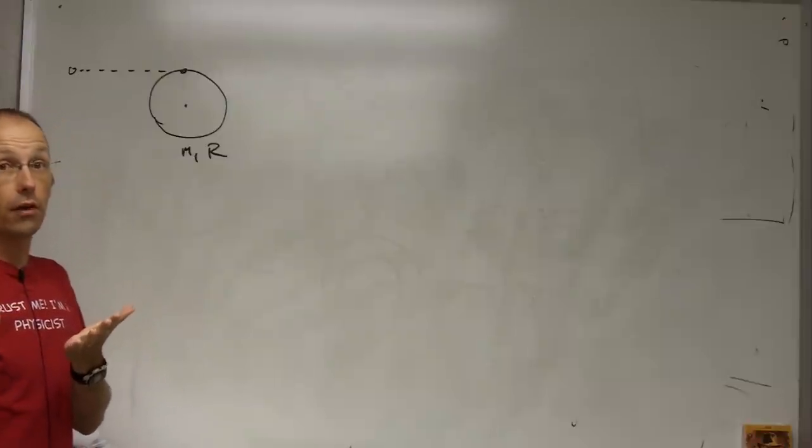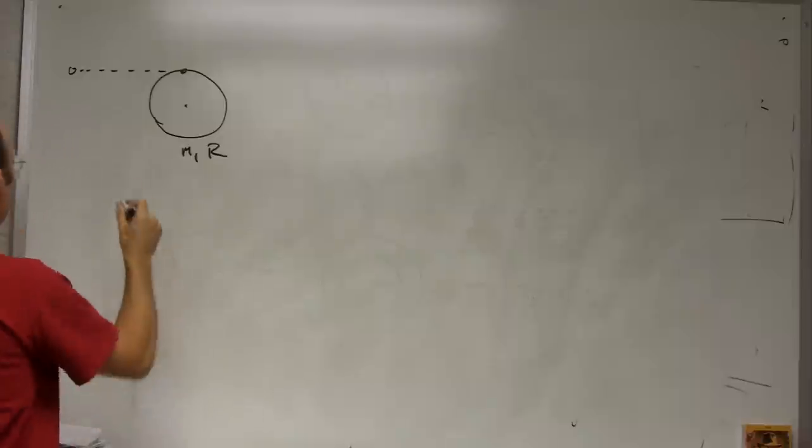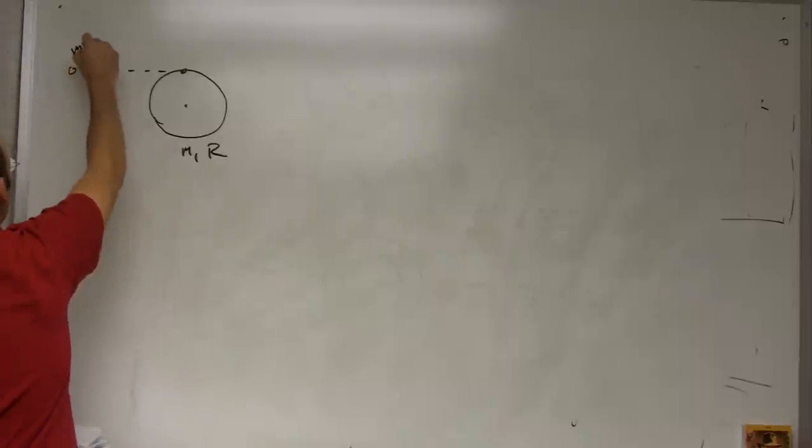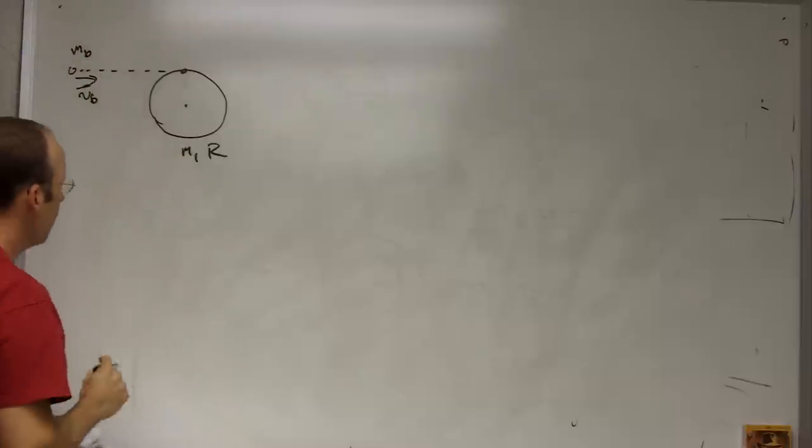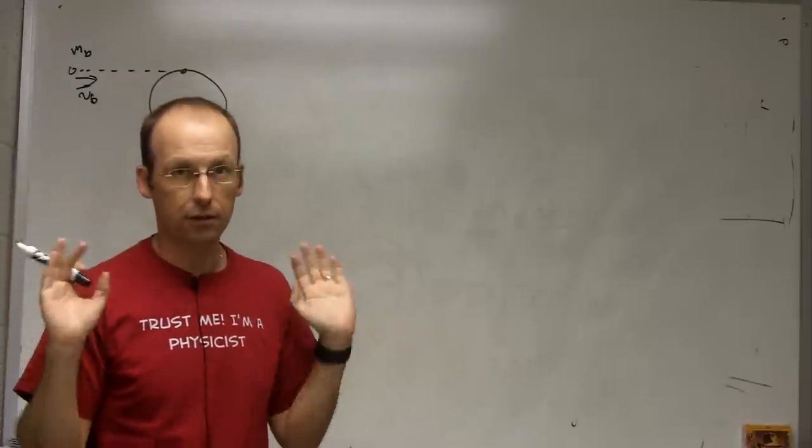What would be the angular velocity after that happens? Okay, so let's say this is mass mb and it's shot with the velocity vb that way, and it collides right on the edge of that and let's just say it sticks. Whether it does or doesn't, let's just say that it does.